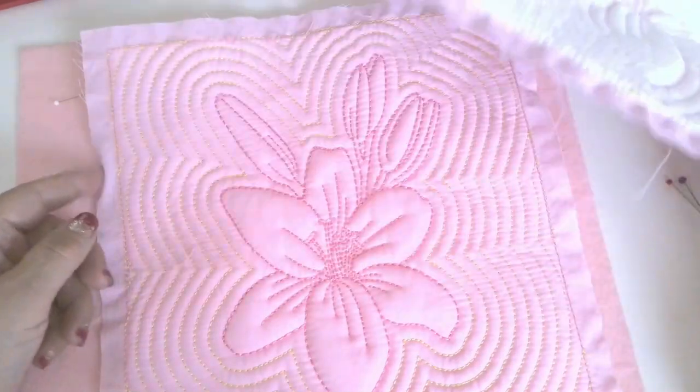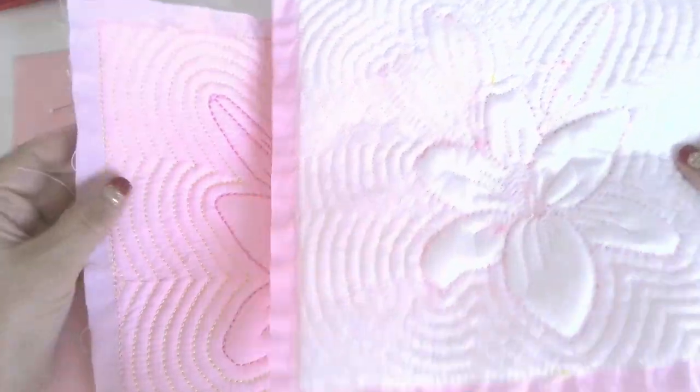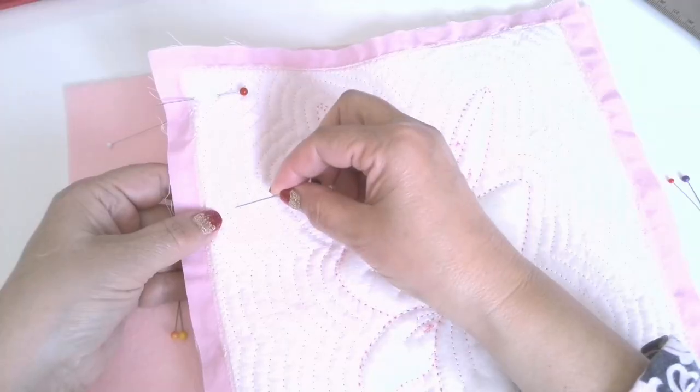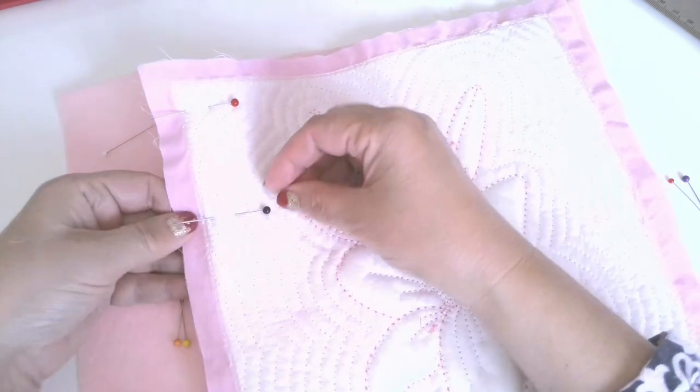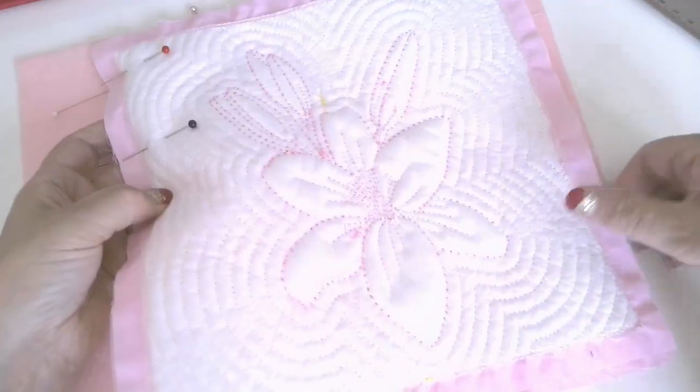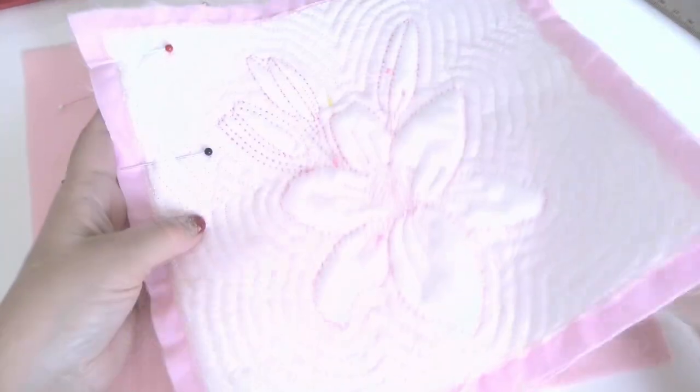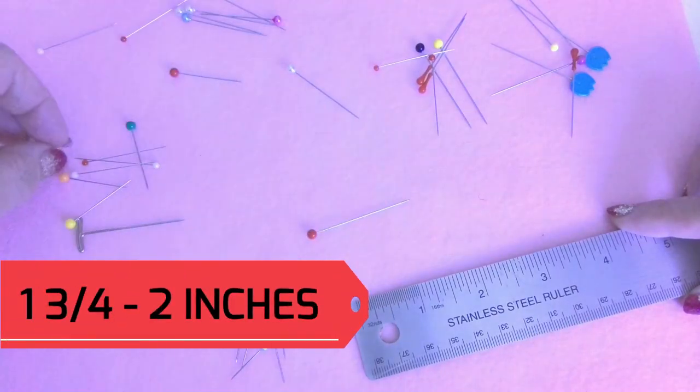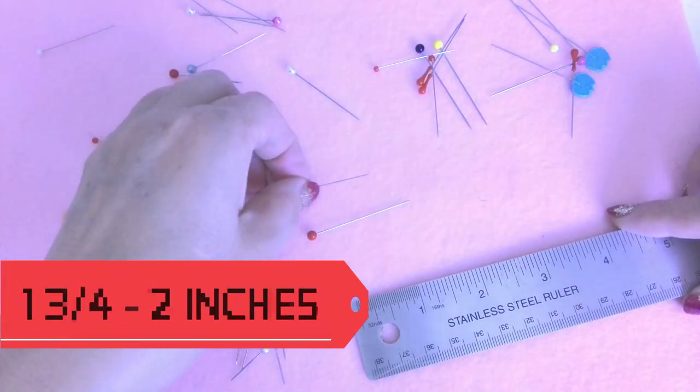Quilting and other multilayer projects require longer pins in order to pin through several layers of fabric without being concerned that the pins will fall out. Common quilting pin lengths are one and three quarter to two inches.